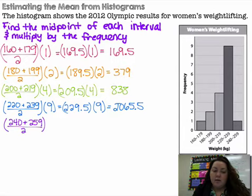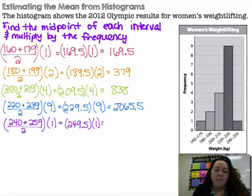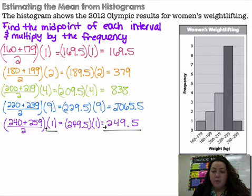My last interval, I'm going to add them up, divide by 2, multiply it by 1 because there's only one woman in that interval. 249.5 times 1 gives me 249.5. So then I'm going to add these up. I'm going to add up how many total women were in this histogram, which was 17. 1 for the first category, 2 for the next, 4 for the third, 9 for the fifth, and 1 for the sixth. That makes 17.